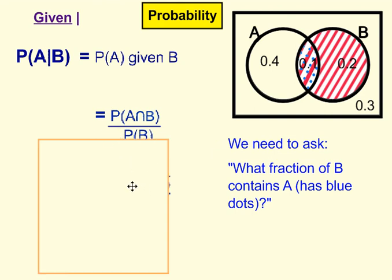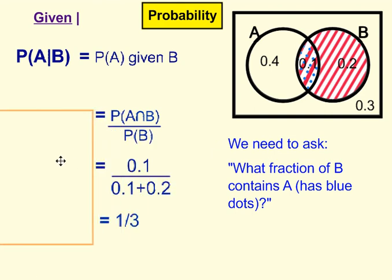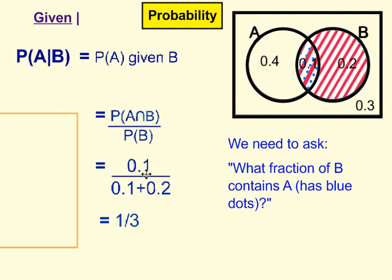A common mistake is to think: well, I know my intersection is 0.1, so I just divide by 0.2. But you're not dividing by 0.2 — you're dividing by this whole area. So it's 0.1 divided by 0.1 plus 0.2, which gives us 0.1 over 0.3, which is 1 over 3.